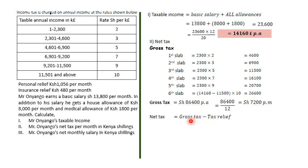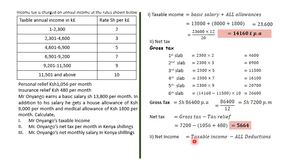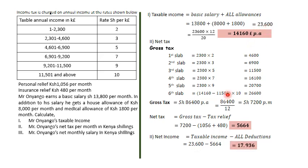Net tax equals gross tax minus tax relief. Adding personal relief 1,056 and insurance relief 480, then subtracting from 7,200 gives a net tax of 5,664 shillings per month. For part three, net income is taxable income minus all deductions: 23,600 minus 5,664 equals 17,936 shillings per month.